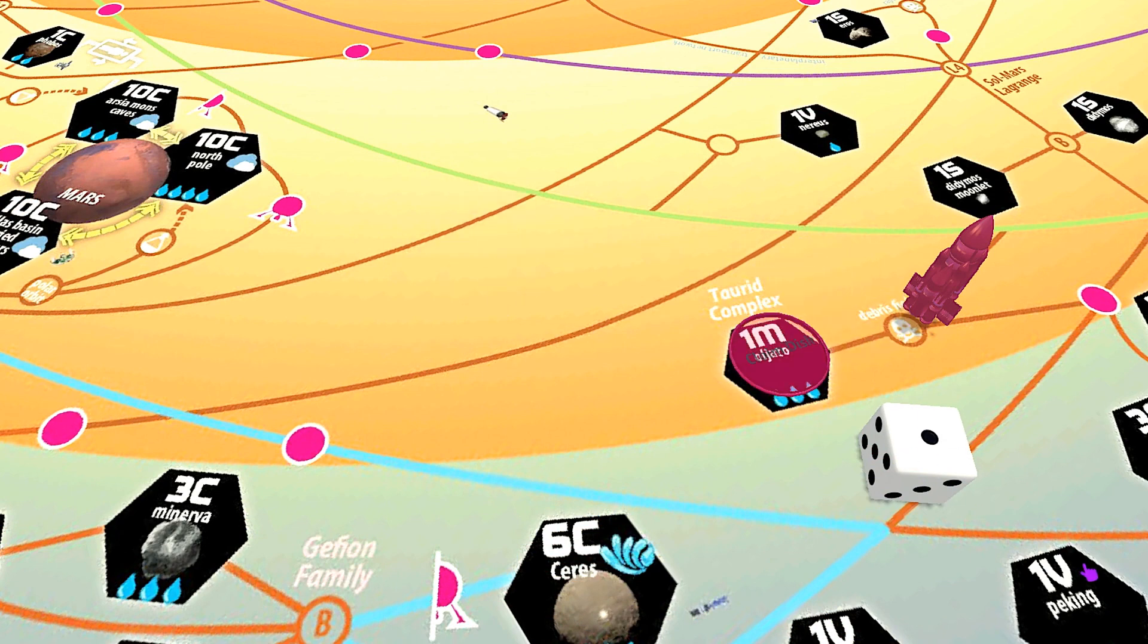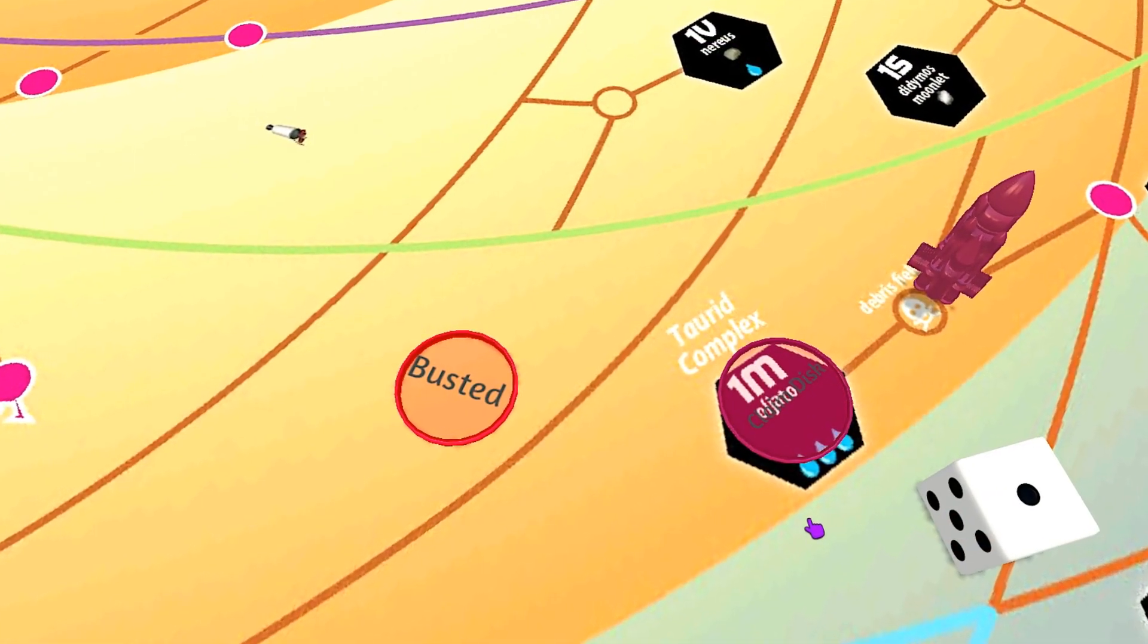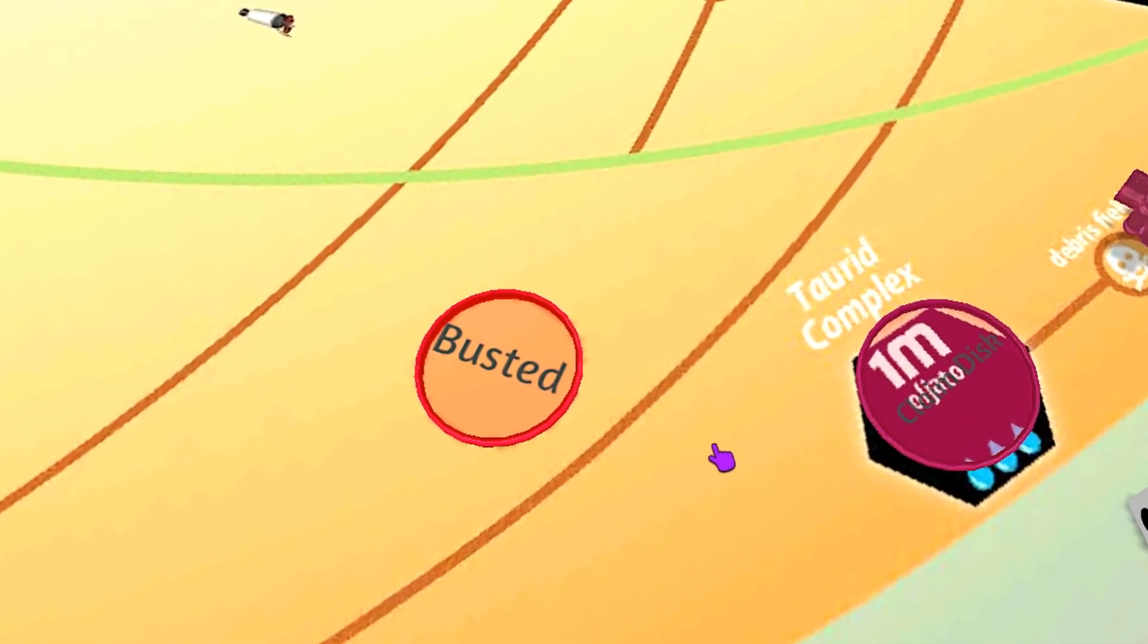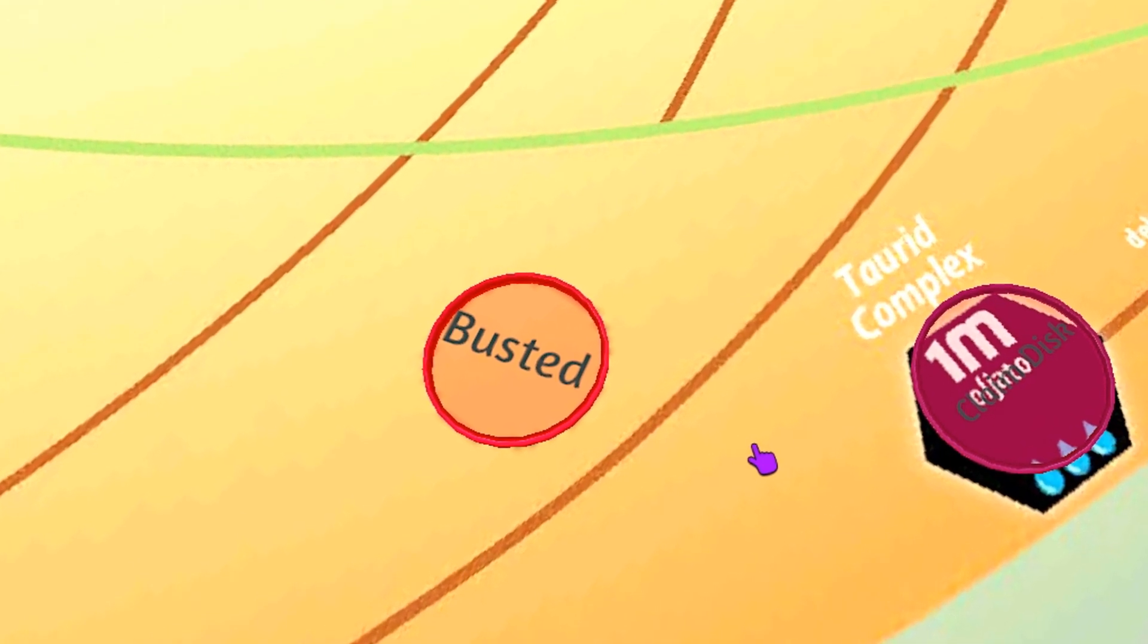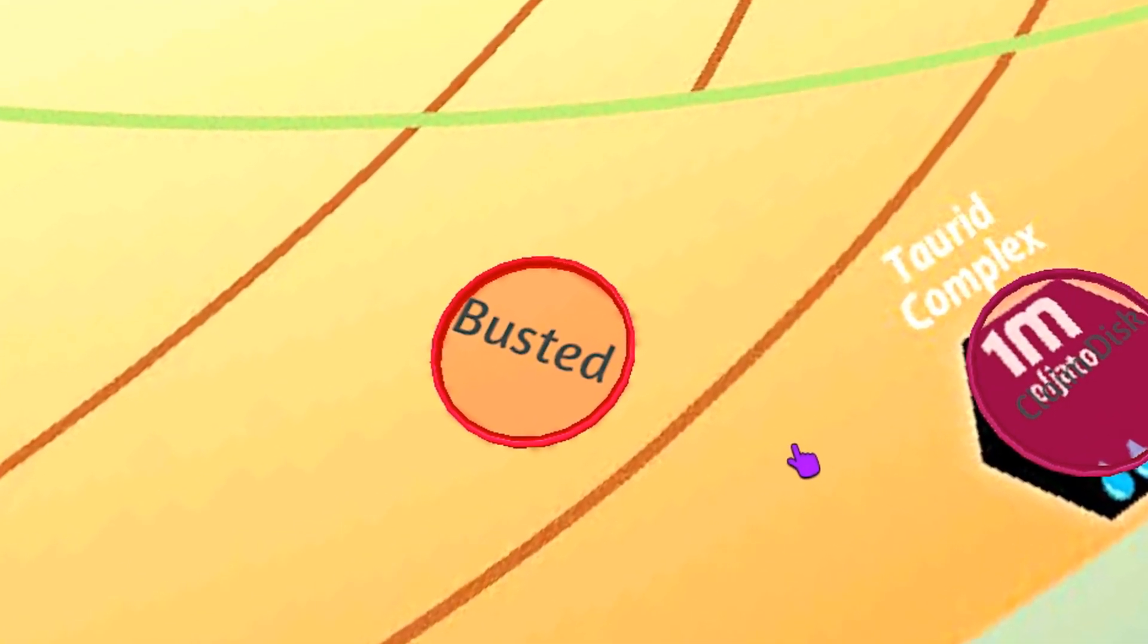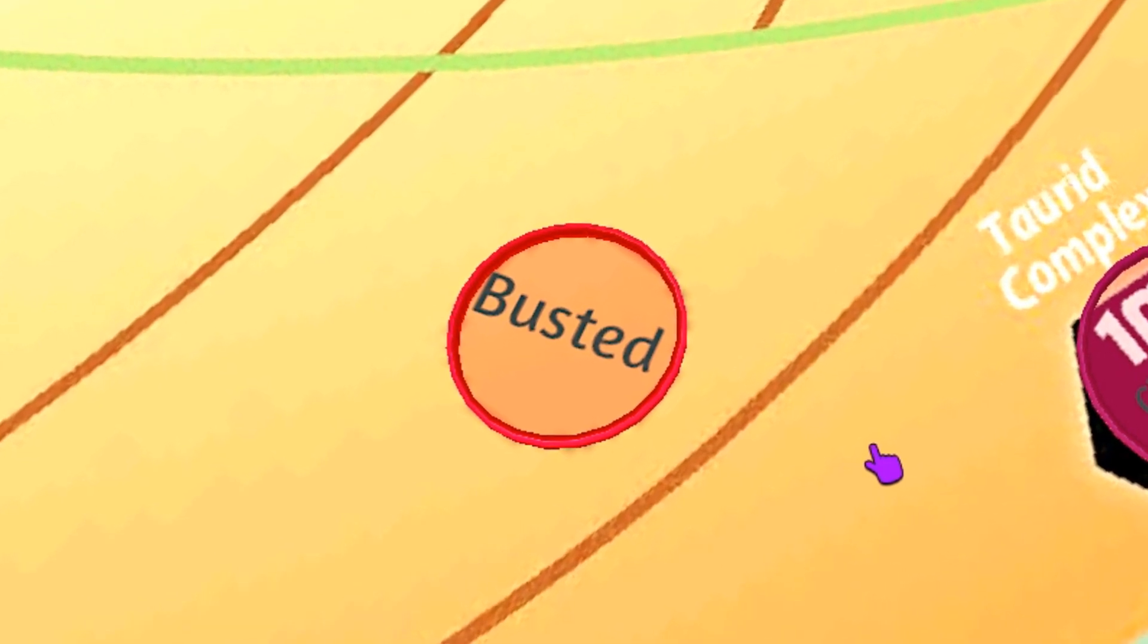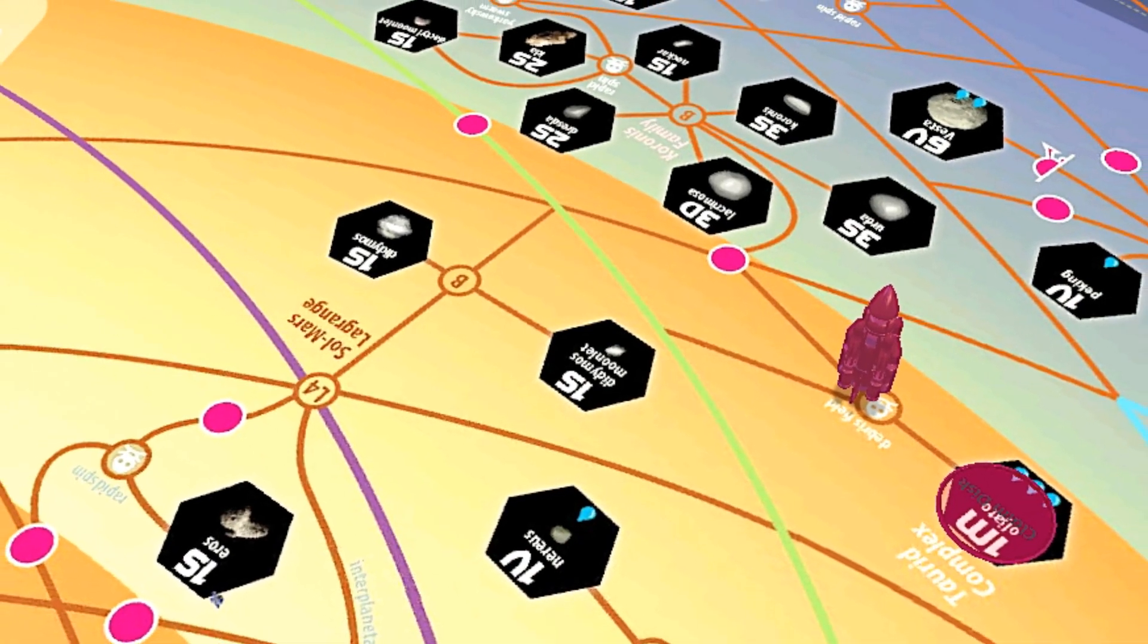If I had missed the roll, I would have placed a translucent red disc on the site, which means it is busted. A busted site means that there is nothing of interest and it cannot be prospected again by any player. You can still use the site for refueling though if you want to.